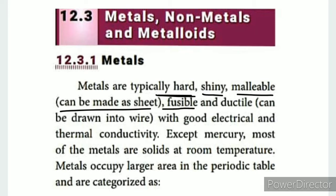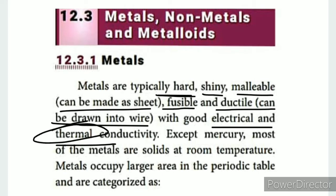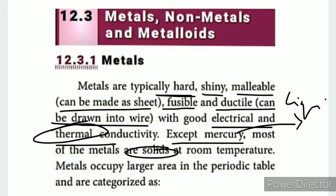All metals are solid, except Mercury, which is liquid. Mercury is very important and you can observe it in the chemistry lab. Metals occupy a larger area in the periodic table and are categorized into groups.